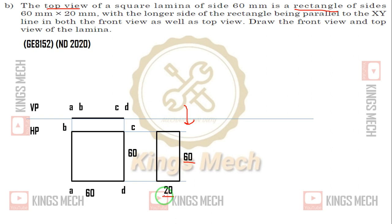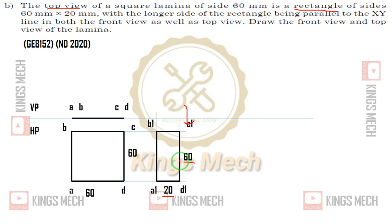So this is what is happening in the problem: the dimension is 60 by 20. If we say this view is a rectangle, we label it A1, B1, C1, D1. The top extrusion is like this — B1 is on top, C1 is on top. This is the full distance.